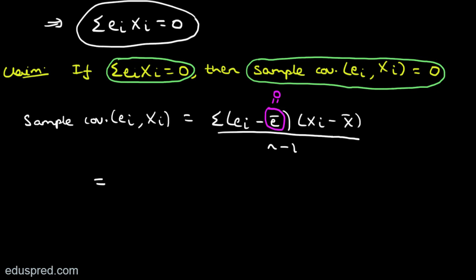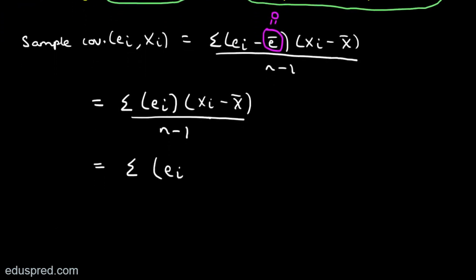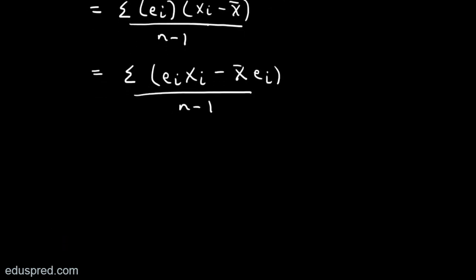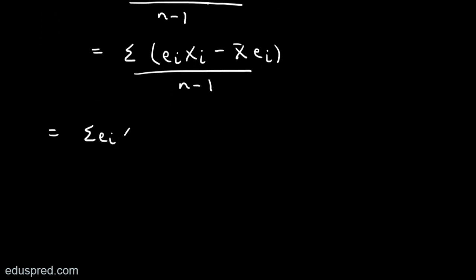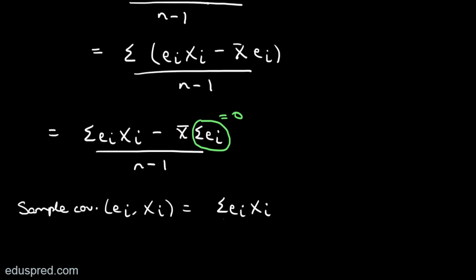With Ē equal to 0, the sample covariance becomes summation Eᵢ(Xᵢ minus X̄) divided by N minus 1. Multiplying out the brackets gives summation EᵢXᵢ minus X̄ multiplied by summation Eᵢ, all divided by N minus 1. From the first useful result, summation Eᵢ equals 0, so the second term in the numerator vanishes, leaving the sample covariance equal to summation EᵢXᵢ divided by N minus 1.